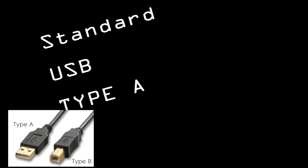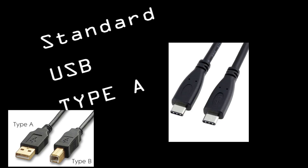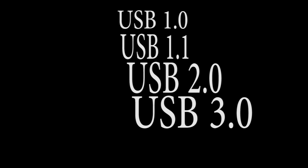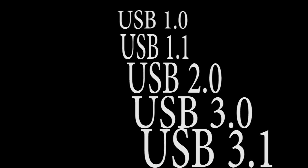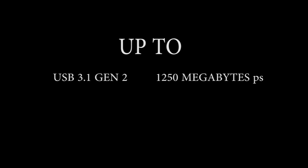To conclude: USB Type-A, B, and C are just the different types of adapter heads. And USB 1, 1.1, 2.0, 3.0, and USB 3.1 are the speed technologies that all run at different speeds — one being the slowest and 3.1 Gen 2 the fastest. Well, that is going to be it for this video. I hope that this cleared up a bunch of confusion for you.